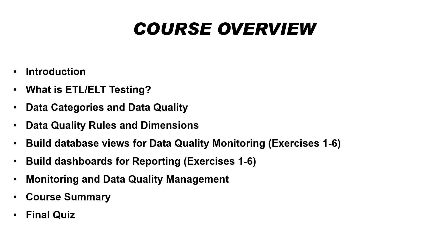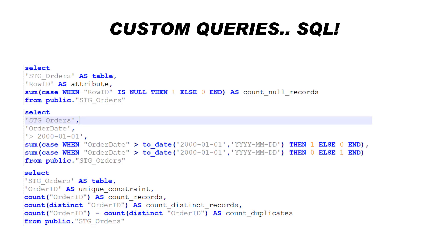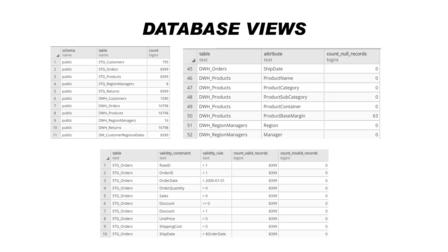Finally, we're going to end with a course summary and a final quiz, just to summarize everything and practice what you learned throughout this course. This is a very practical course because we're going to look at how we can use SQL queries to build database views and test our ETL flows. We're going to use queries to test the completeness of our data set by counting the number of null records, and also build custom queries based on some business rules and exercises. We're going to store these queries in database views — using PostgreSQL, which is an open source database — but you could also use Oracle or Microsoft SQL Server.